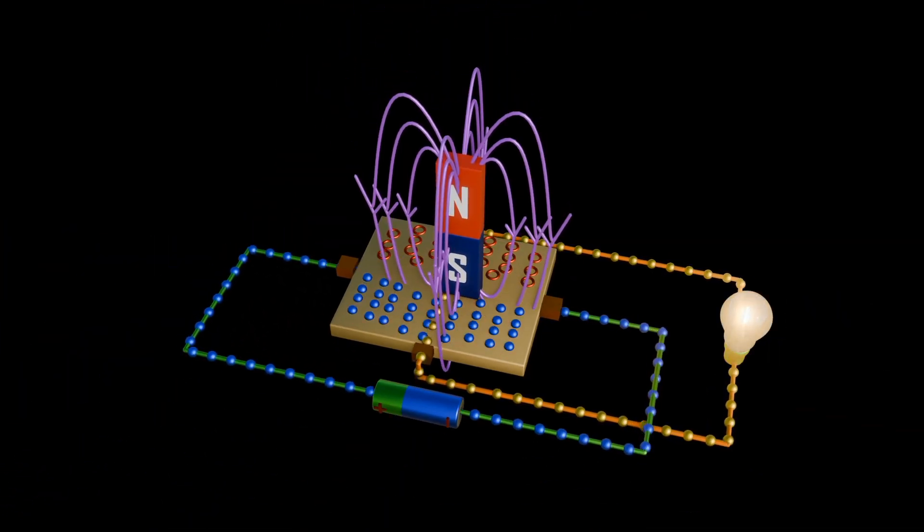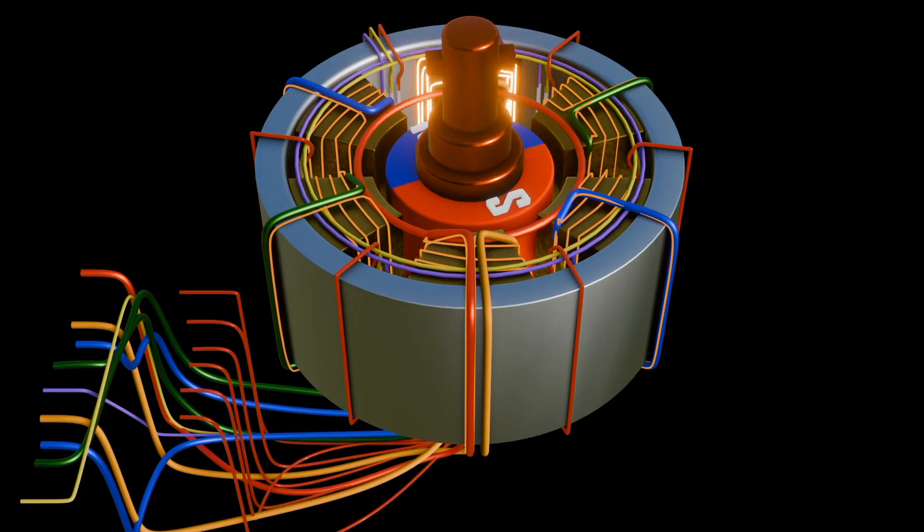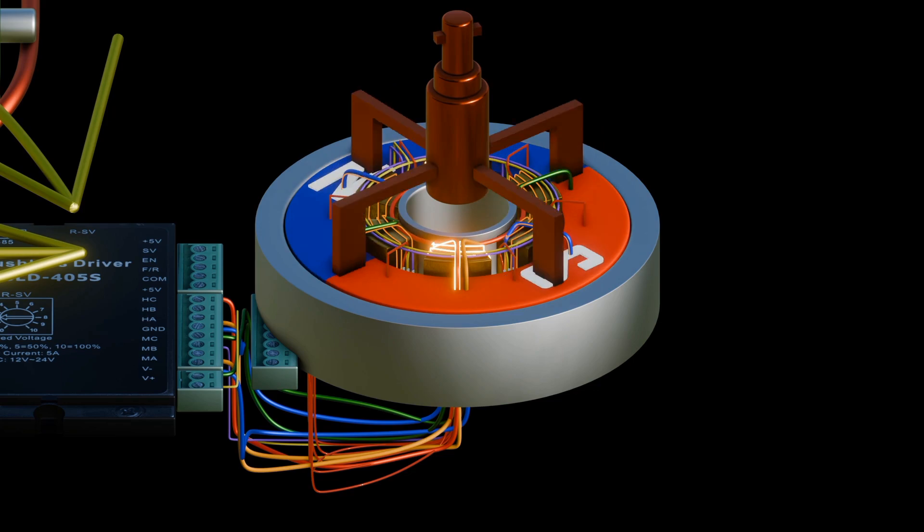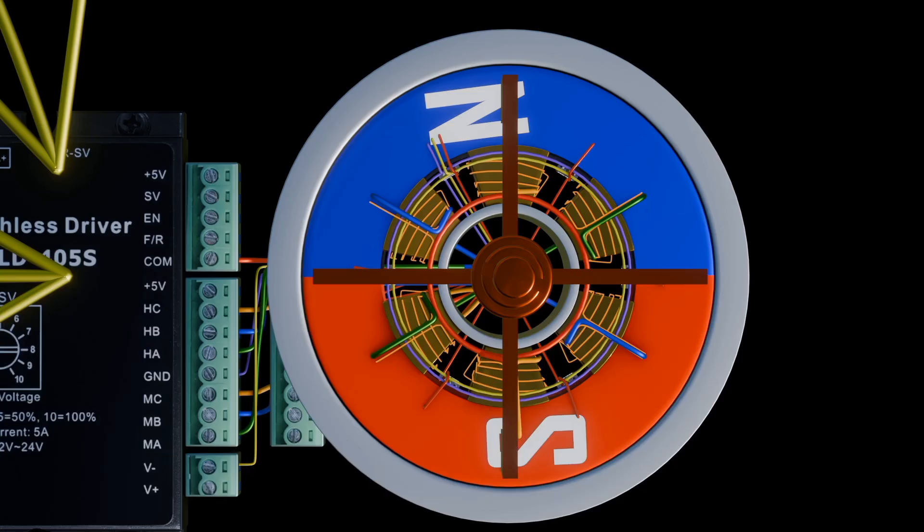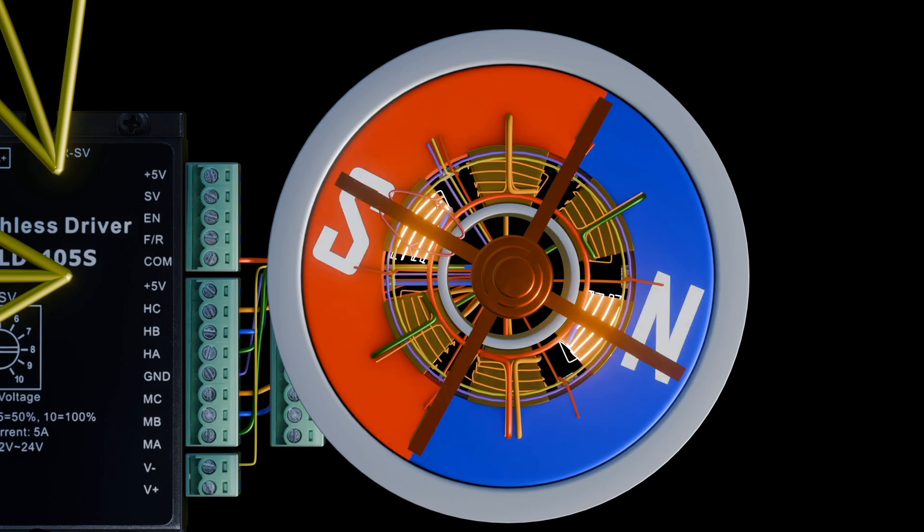Another thing to note is that these kinds of motors whose rotor is inside the stator are called in-runners, while those motors whose rotor is placed outside the stator are called outrunners. Outrunners typically produce higher torque compared to in-runner motors of similar size, making them suitable for applications requiring high torque output.